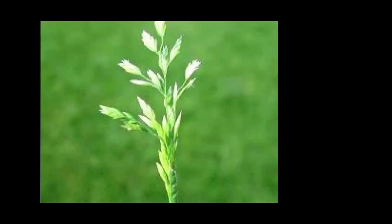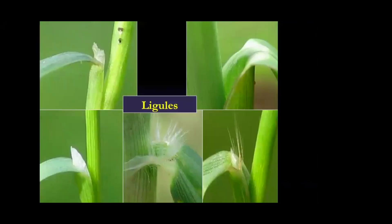Here's a look at the Poa annua seed head — we'll start seeing a lot more of this in winter and springtime. The panicle inflorescence has multiple branches and is a great characteristic to distinguish Poa annua from other grassy weeds. Grassy weeds also have a very distinct structure at the base of the leaf blade called ligules — found where the leaf joins the stem — which can help determine species if no seed head is present.